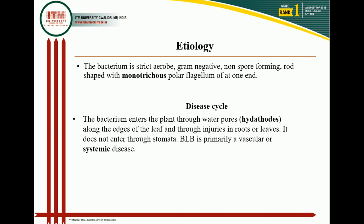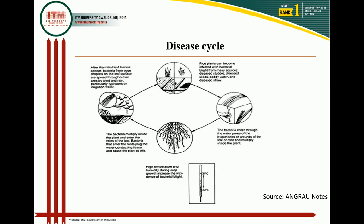Disease cycle summary: the rice plant can become infected with bacterial blight from many sources — diseased stubbles, seed, paddy water, and soil. Bacteria enter through water pores, hydathodes, or wounds on the leaf, root, or multiply in the plant. High temperature and humidity during crop growth increase the incidence of bacterial blight. After initial leaf lesions appear, bacteria form droplets on the leaf surface and spread throughout the area by wind, rain — particularly typhoons — and irrigation water.